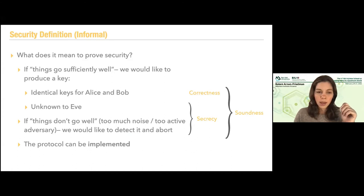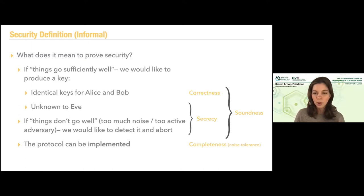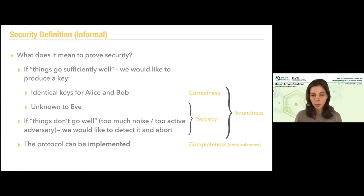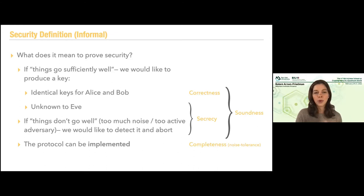The next thing we want is that the protocol can be implemented. In contrast to the classical setting, this is called completeness — or also noise tolerance. In the classical setting, completeness basically means here is a protocol that solves the problem. But we don't just need to solve the problem; we also want to be able to implement it in practice and actually produce these keys. Because we're talking about quantum devices, this is not trivial. If a protocol can be implemented right now or in the future, this is what we call completeness.